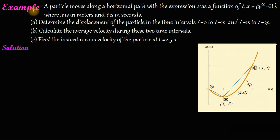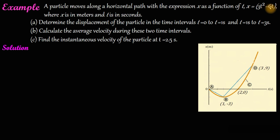Salam, Ahmed Ibn Al-Lawin. I'm going to show you an example. A particle moves along a horizontal path with the expression x as a function of time. x is equal to 3t squared minus 6t, where x is in meters.